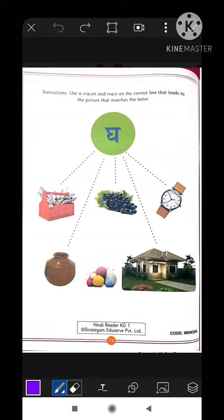Today, we are going to solve page number 74 of Hindi reader workbook. Instructions: Use a crayon and trace on the correct line that leads to the picture that matches the letter. Our past friend is Gha.